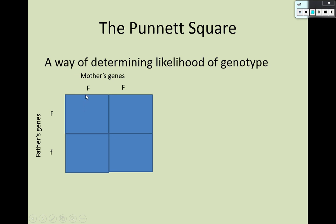We treat this like a multiplication table. We bring this big F down and across, and this big F down and across, this big F down and down, and this little f across and across. So we get: big F, big F in one cell because this big F came down and this big F came across; big F, little f because this big F came down and this little f came across; and so forth. These squares in the middle represent the possibility of offspring.